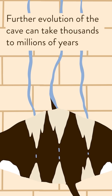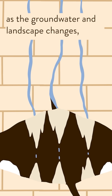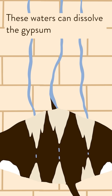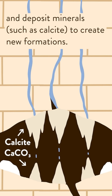Further evolution of the cave can take thousands to millions of years. As the groundwater and landscape changes, surface waters can flow through cracks. These waters can dissolve the gypsum and deposit minerals such as calcite to create new formations.